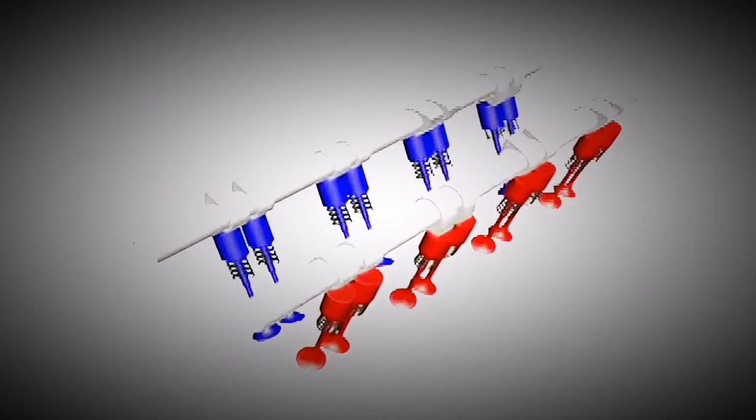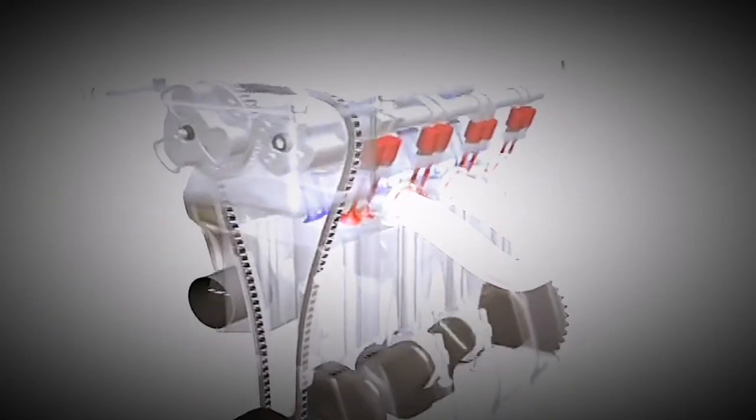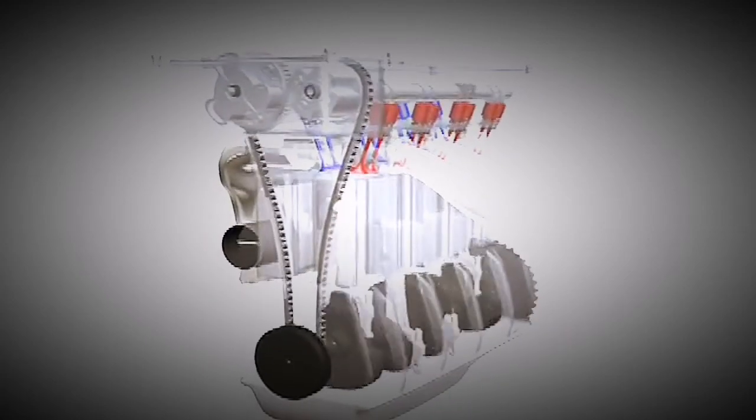When an engine uses separate camshafts for the intake and exhaust valves mounted above the valves, this design is called double overhead camshafts or DOHC. All Toyota engines use double overhead camshaft.